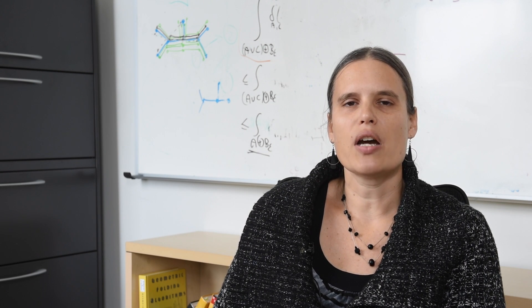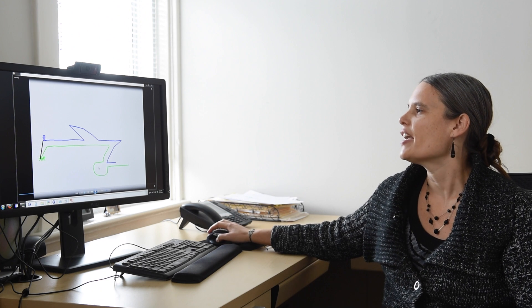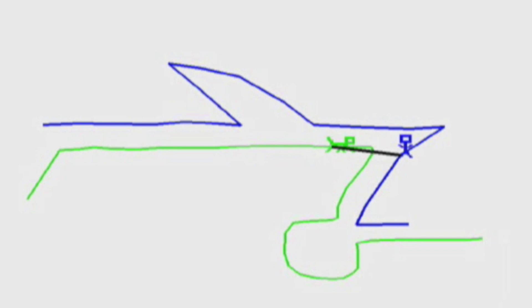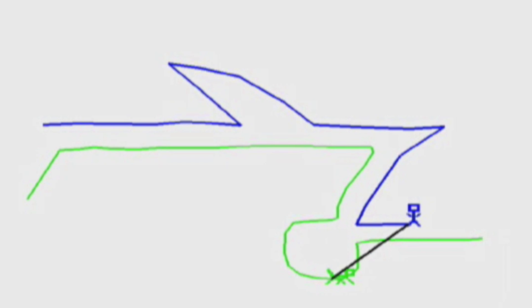Let me show you how the Fréchet distance is intuitively defined. Consider two curves, such as the green curve and the blue curve in this example. Now consider a man walking on one curve and a dog walking on the other, and the man holds the dog on a leash. They're supposed to walk on their curve from beginning to end, and they're only allowed to go forwards — they cannot jump or go backwards. The Fréchet distance is defined as the smallest leash length necessary for them to traverse both curves.